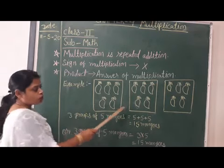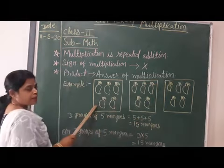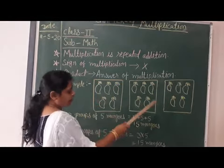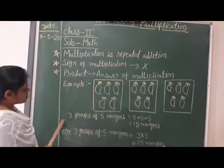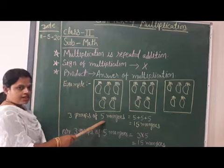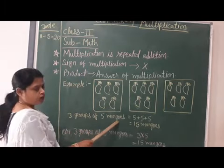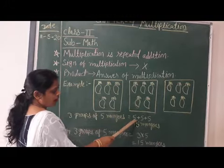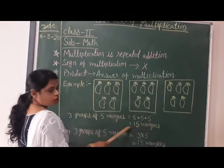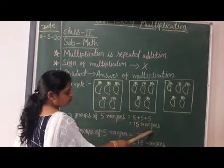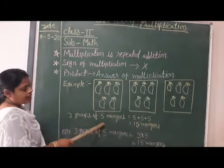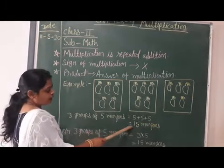There are three groups of five mangoes. Five mangoes plus five mangoes plus five mangoes equals fifteen mangoes. This is repeated addition.